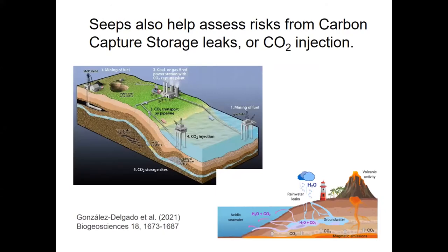Another really cool thing about CO2 seeps is that they can help us work out what's going to happen if carbon dioxide sequestration goes wrong. It's getting pretty serious with the effects of CO2 on the climate, and we're looking at perhaps sucking CO2 out of the atmosphere and putting it below the earth's crust or into the ocean. There's a nice paper discussing the groundwater CO2 interaction around the Canary Islands — a volcanic area where seawater below ground has high levels of CO2 that permeates out across surrounding habitats, making it an analogue for the effects of carbon sequestration.